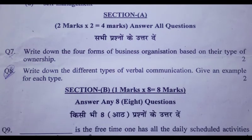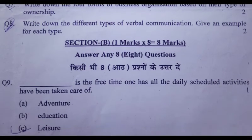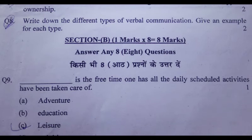Question 7: Write down the 4 forms of business organization based on their type of ownership. Question 8: Write down the 2 types of wearable communication and give an example for each type. Section B: Answer any 8 questions.